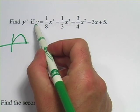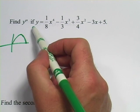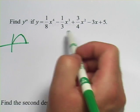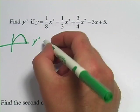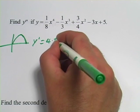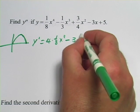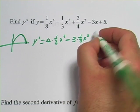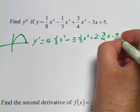So here's y. If we want to find y double prime, and that represents the second derivative, we'll find the first derivative, and then we'll take the derivative of that. So let's find y prime first. So we're just going to apply the power rule here. So this would be 4 times 1 eighth times x to the third, minus 3 times 1 third x squared, plus 2 times 3 fourths x minus 3.